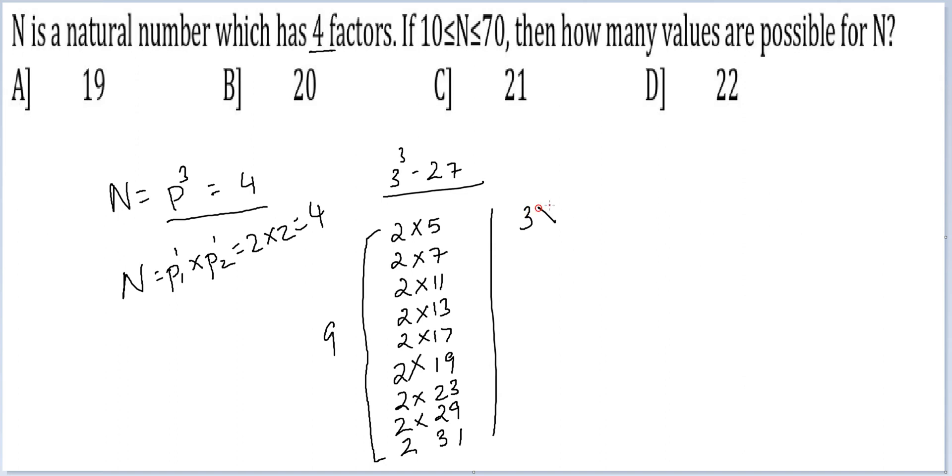Let's count the cases where 3 is involved. So 3 into 5 would be the smallest case, 3 into 7, 3 into 11, 13, 17, 19, 23. These are the listings that you would have with 3. Let's count how many cases we have here.